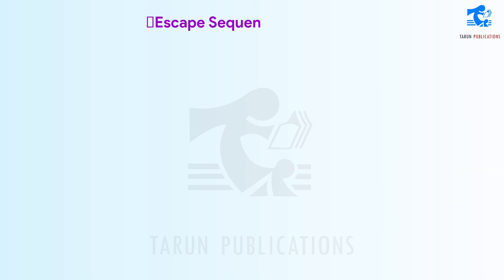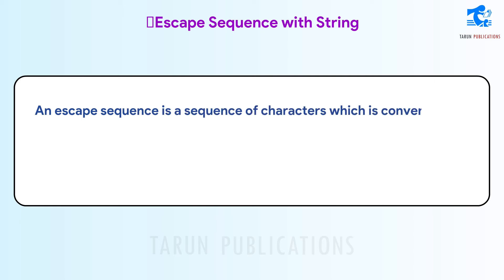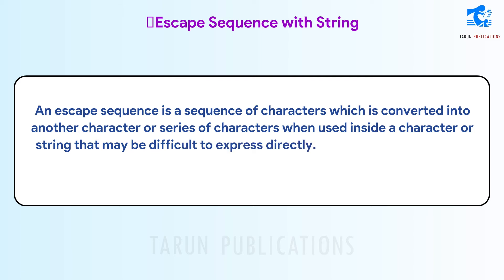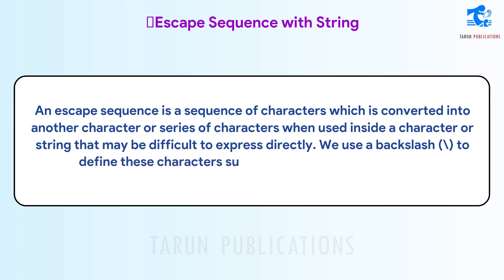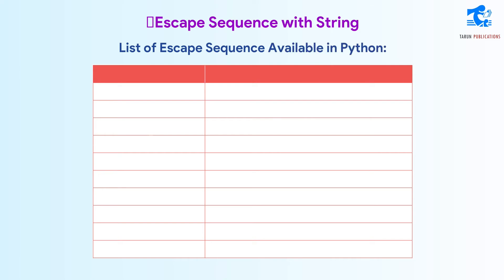Escape Sequence with String. An escape sequence is a sequence of characters which is converted into another character or series of characters when used inside a character or string that may be difficult to express directly. We use a backslash in the text to define these characters such as new line (\n), tab (\t), etc. A list of escape sequences available in Python is provided.